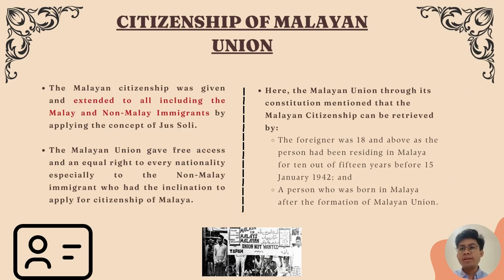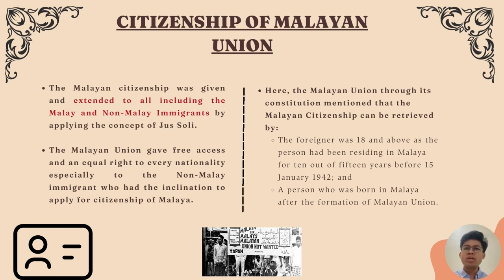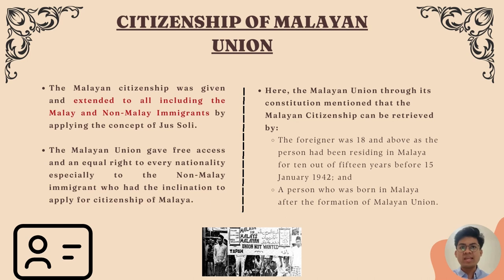In terms of the citizenship of the Malayan Union, it is notable that Malayan citizenship was given as standard to all, including Malay and non-Malay immigrants, by applying the concept of jus soli, giving free access and equal rights to every nationality. Citizenship could be obtained in two ways: first, a foreigner aged 18 and above who had resided in Malaya for 10 out of 15 years before 19 January 1942 could apply; second, a person born in Malaya after the formation of the Malayan Union could also apply for Malayan citizenship.